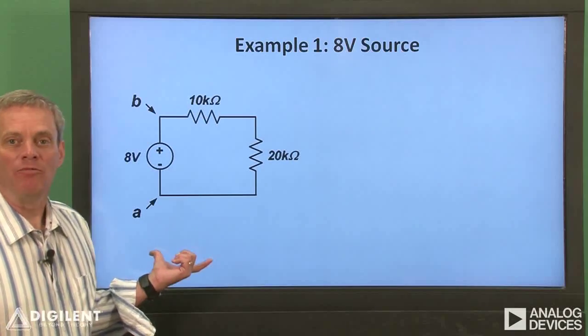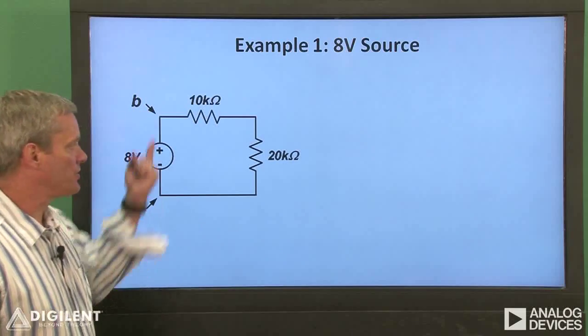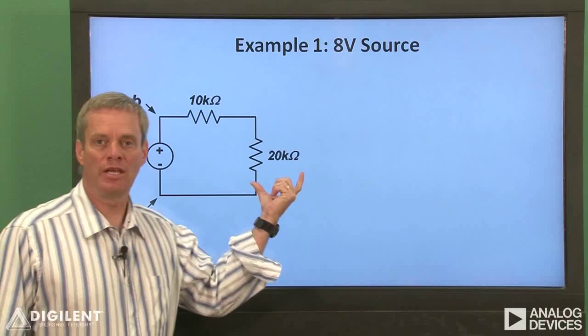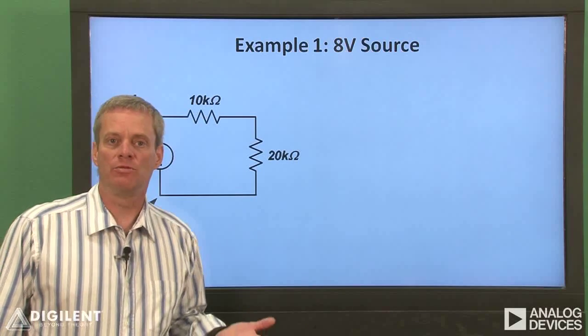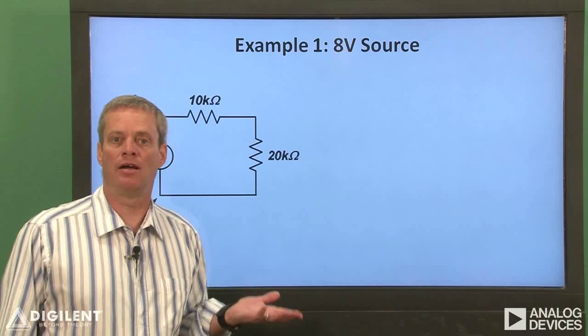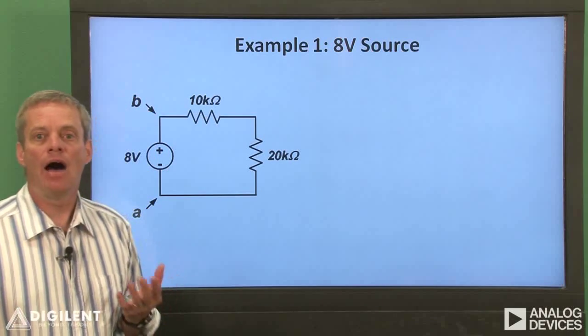Here's a simple example of what I mean. We have a circuit which has an 8 volt source applied across a series combination of a 10 kilo ohm and 20 kilo ohm resistor. Obviously we don't have the capability of applying 8 volts with any single voltage supply on the analog discovery.